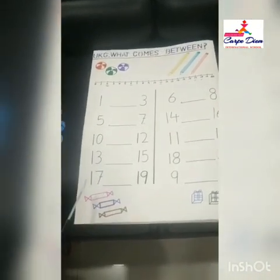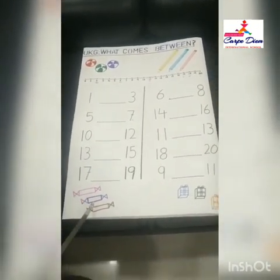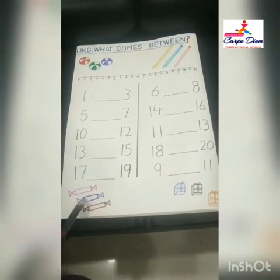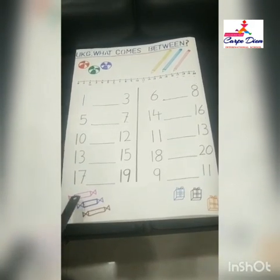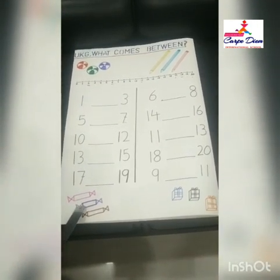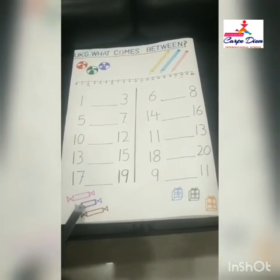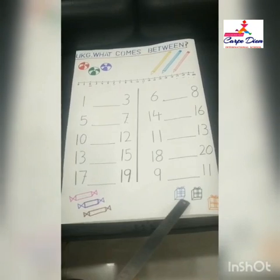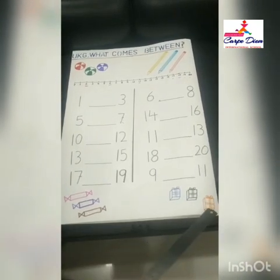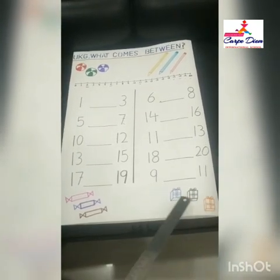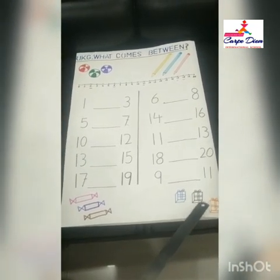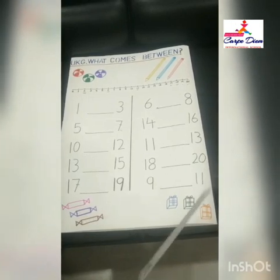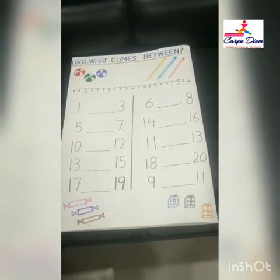These are three candies. Which color candy is in the middle? In between — purple color candy. These are three gift boxes. Which box is in the middle? Black color box is in the middle.